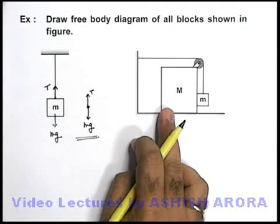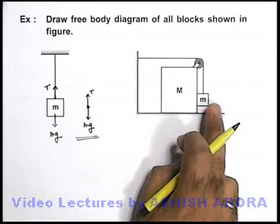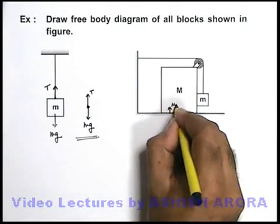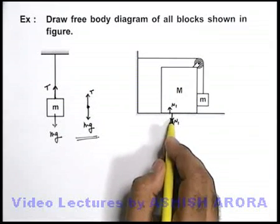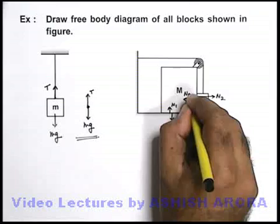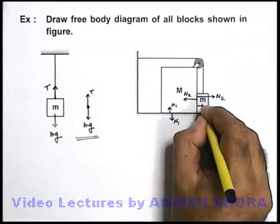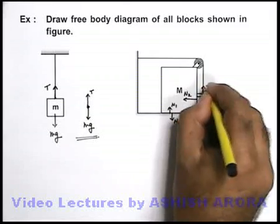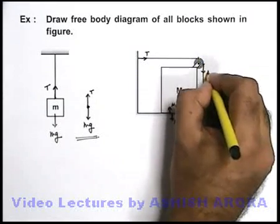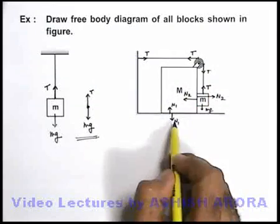Similarly, in this situation if we carefully have a look: if this block is released or kept at rest, you can see a string is passing over it and a small mass m is hanging as well as being supported by the block of mass capital M. In this situation, at the bottom contact, N1 is the contact force — the normal reaction which is present. If capital M is pulled toward the right, another normal reaction N2 will be present, due to which capital M will push small m and small m will react on capital M. Due to the weight of small m, the string will get a tension T acting upward here, and at the pulley point it will be in the direction toward the right. At the pulley there are two points where the string is in contact, and the tension will act in the direction away from each point of contact.